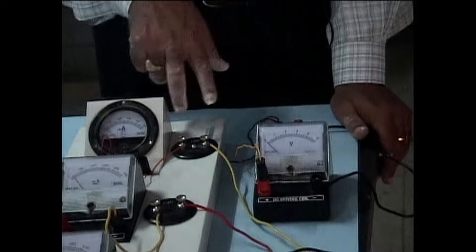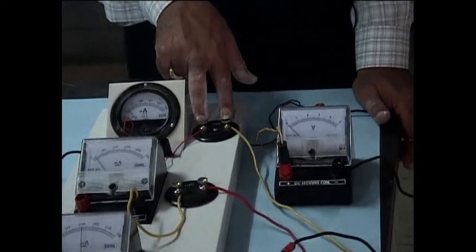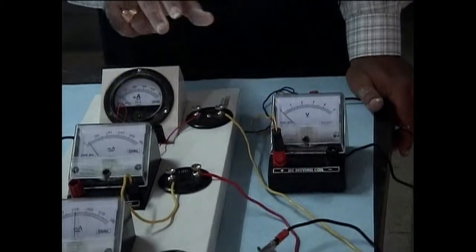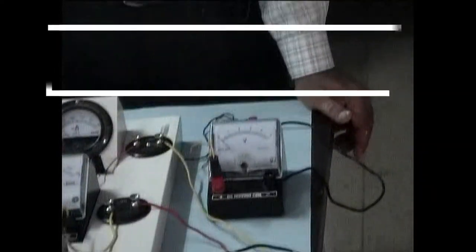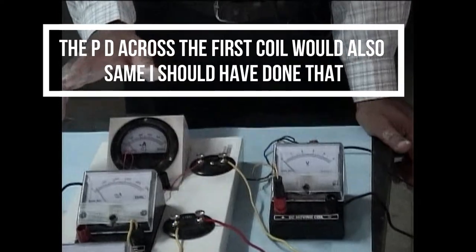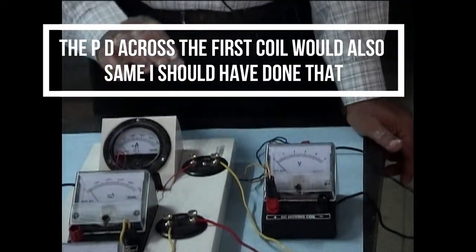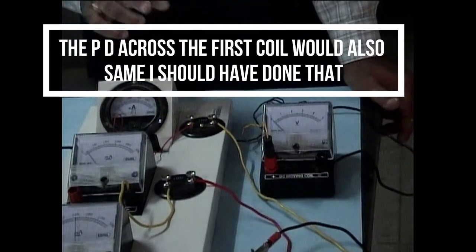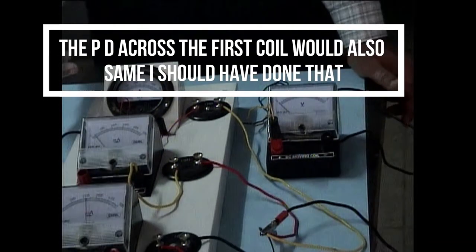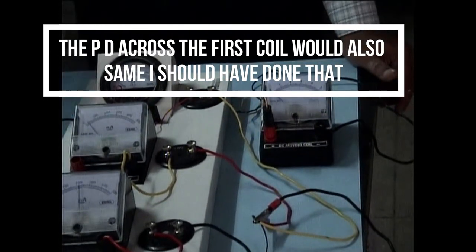But when I took the potential drop across this and across this, you have seen that this reading is same. So finally we conclude that the potential difference across any resistor which is connected in parallel remains same. But the current will be more across the lesser resistance and current will be least across the highest resistance.